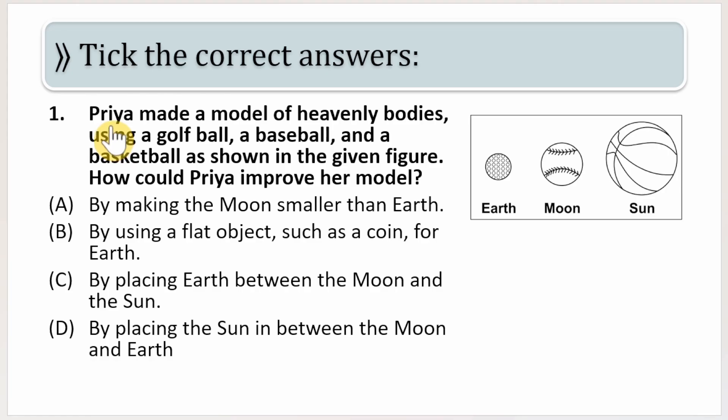First in that list is: Priya made a model of heavenly bodies using a golf ball, a baseball, and a basketball as shown in the figure. How could Priya improve her model? Now if you can observe over here, the golf ball she has considered as Earth.